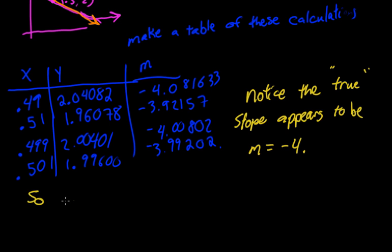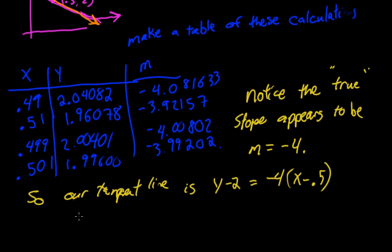So our tangent line is y minus 2 equals negative 4 times x minus 0.5, or alternatively, we can change that to point slope form and get y equals negative 4x plus 4.